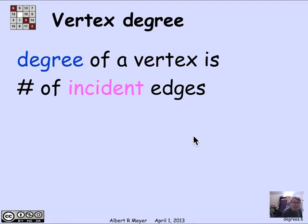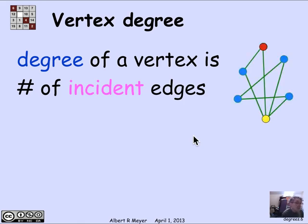Now, a basic concept in graph theory, which is what we're going to make use of in this video segment, is the idea of the degree of a vertex. The degree of a vertex is simply the number of incident edges, the number of edges that touch it, the number of edges for which it's an endpoint.